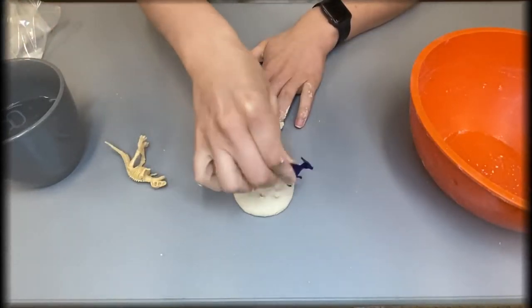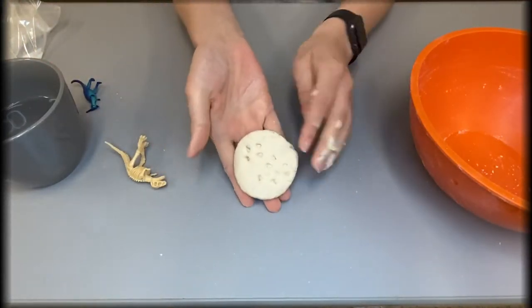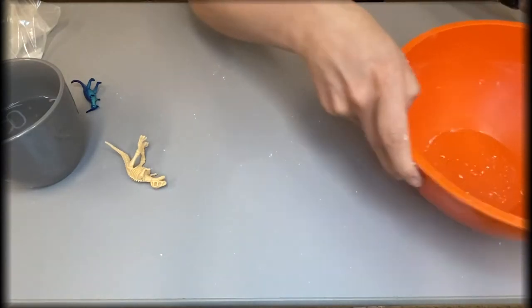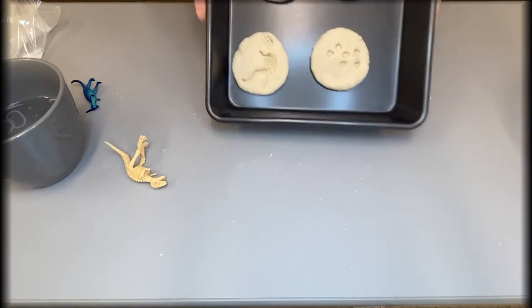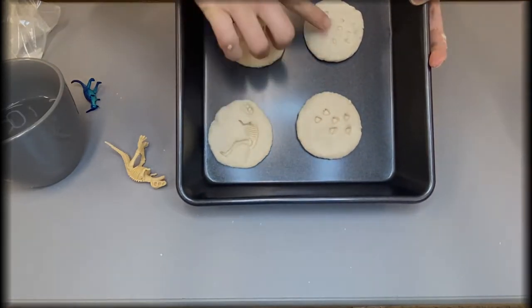Once all your fossil cookies are done, have an adult take the baking sheet and place it in the oven. Continuously check the fossil cookies and remove from the oven once they are hard. Set aside and allow the cookies to cool.